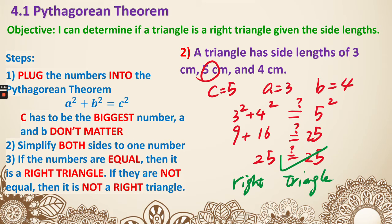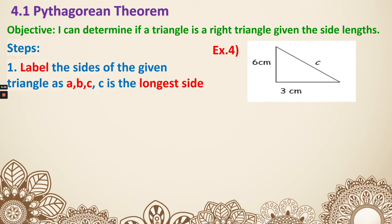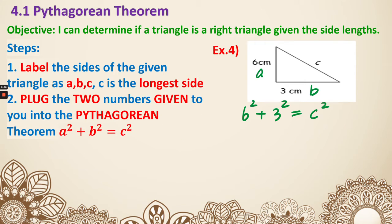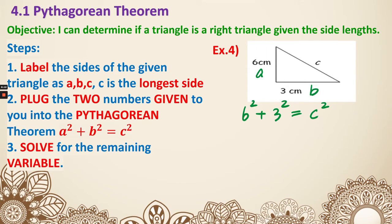Next, we can use known sides to find an unknown side. Step one: label the sides of the given triangle as A, B, and C — C is always the longest side. In this example it's already labeled, so I label A as 6 and B as 3. Step two: plug the two numbers into the Pythagorean theorem — A squared plus B squared equals C squared. Replacing A with 6 and B with 3 gives 36 plus 9 equals C squared, which means 45 equals C squared.